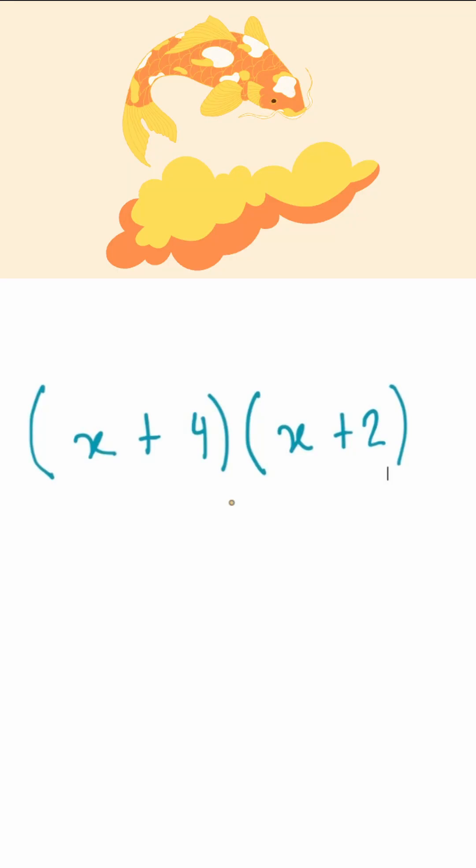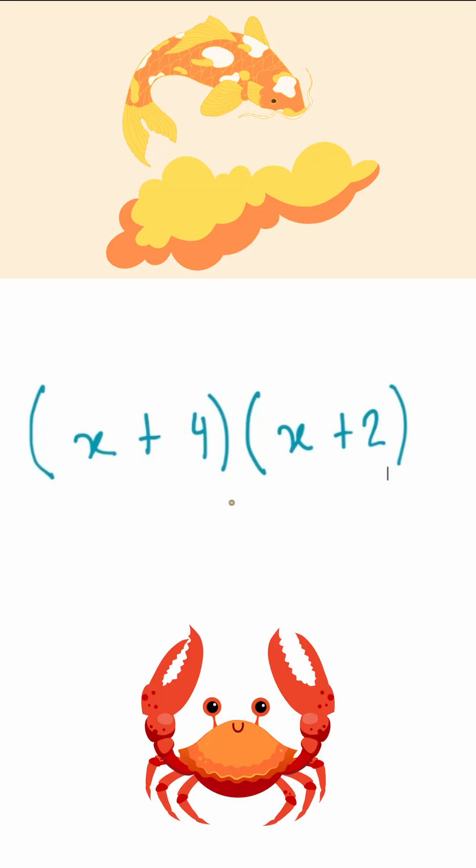When expanding binomials, we use the same crab claw technique. However, it is slightly different because this time we do it in two phases.